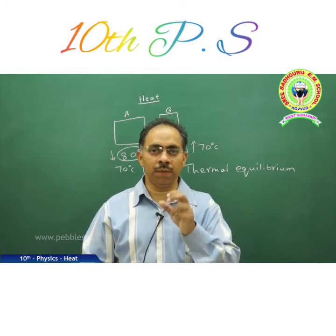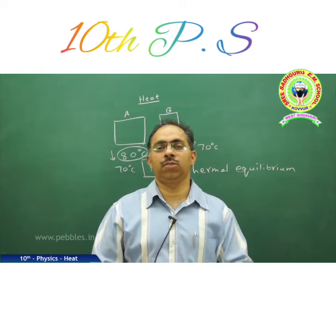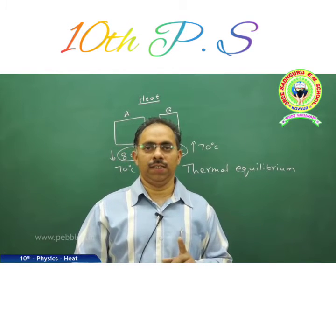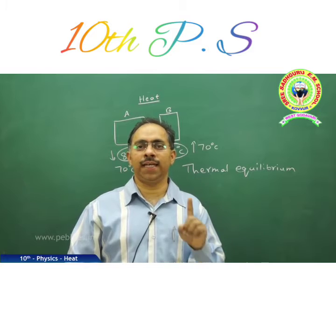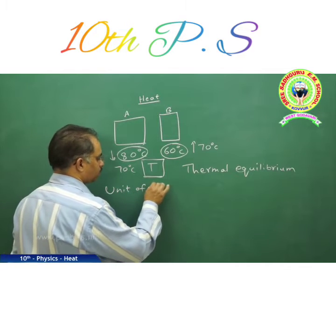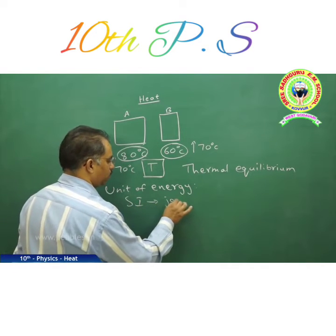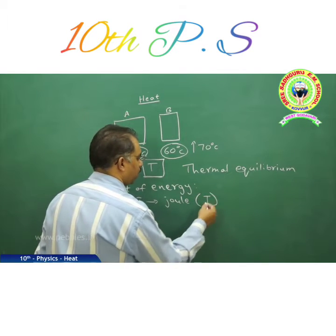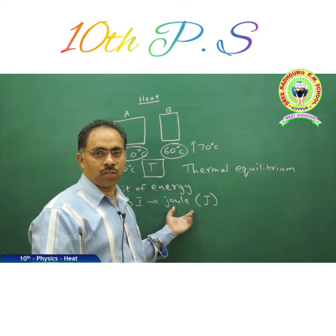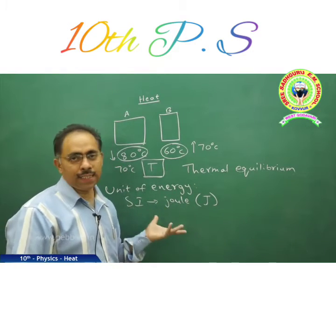To measure heat, we need a unit — it is a physical quantity. Heat is measured in different units, but in SI, any form of energy has the unit joule, symbol J. This unit joule is named after the scientist James Prescott Joule. So joule is the SI unit of energy, and hence the SI unit of heat energy as well.